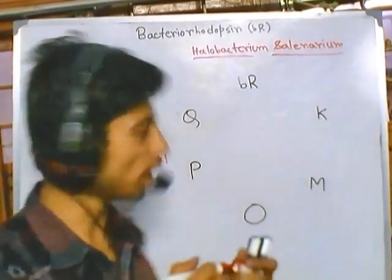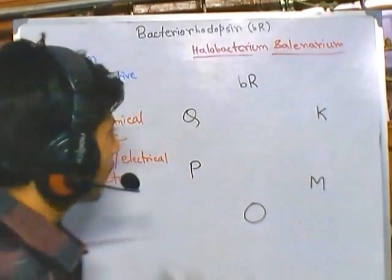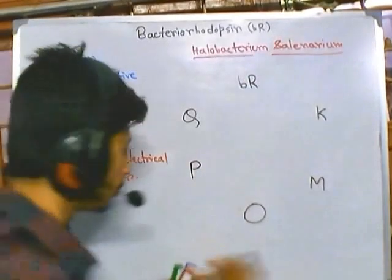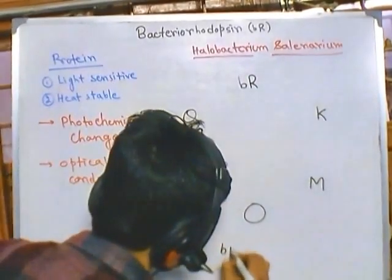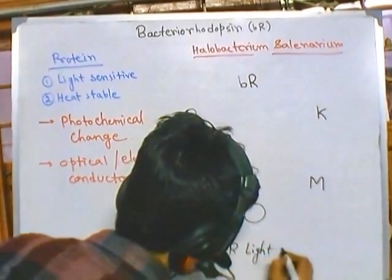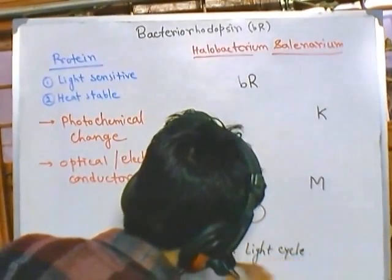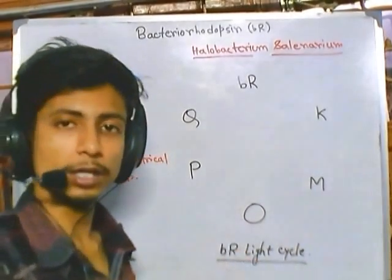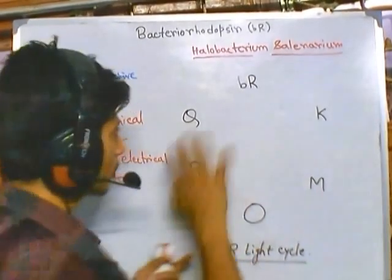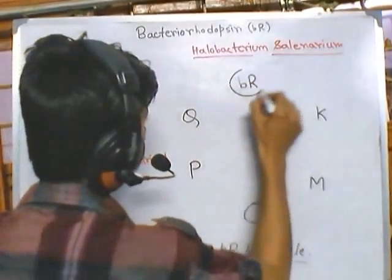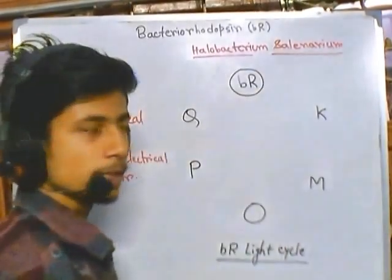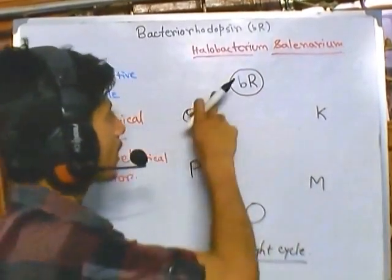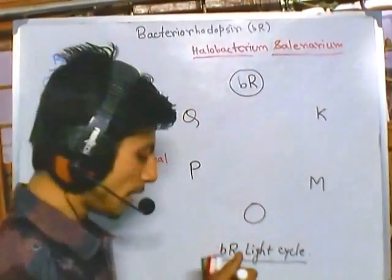Now let's look at the structure and cycle of bacteriorhodopsin — the bacteriorhodopsin light cycle. Depending upon the type of wavelength received, structural modification occurs. The protein starts at its actual base structure of bacteriorhodopsin and moves through a cycle of different structural changes, finally returning to the normal structure again.